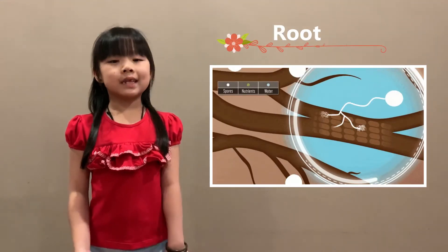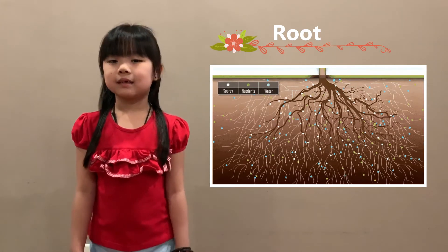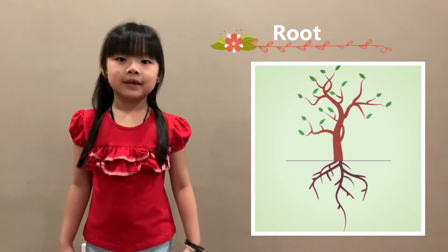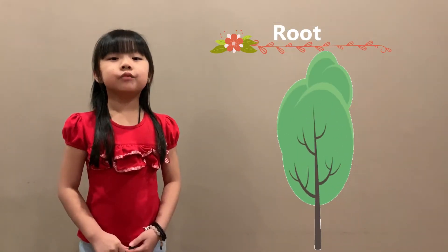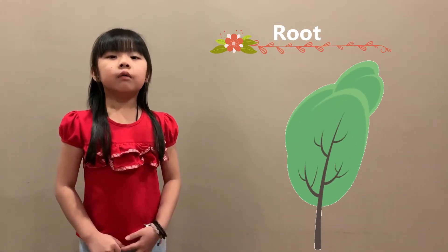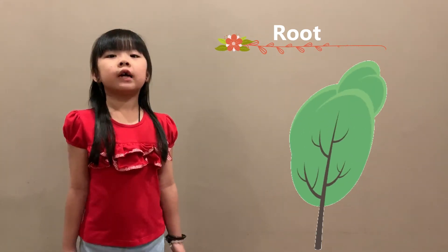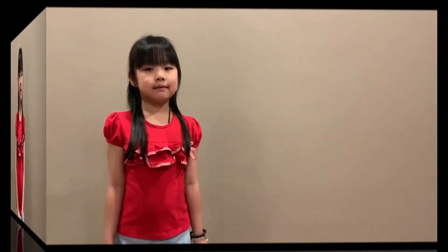Last part of the plant, the root. The root will absorb the water and mineral from the soil. And it also acts as an ankle. So when the wind is very hard, the root will make sure the plant stays firm in the soil so it doesn't carry by the wind.